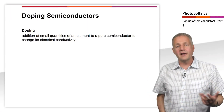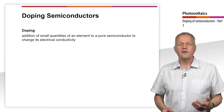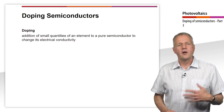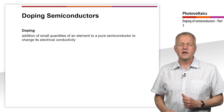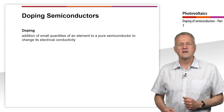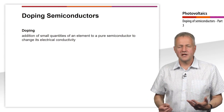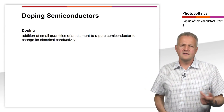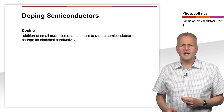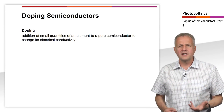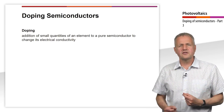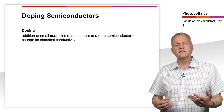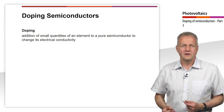Semiconductors generally have a relatively low conductivity. By doping semiconductors, their conductivity can be changed or improved. This is done by selective contamination with impurity atoms of the otherwise very pure crystal.